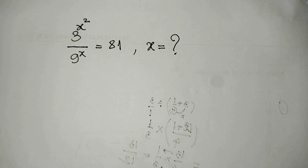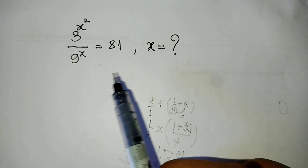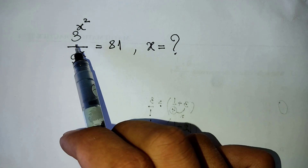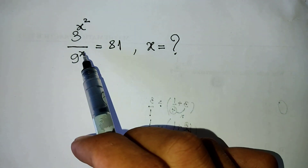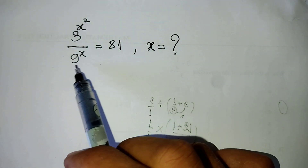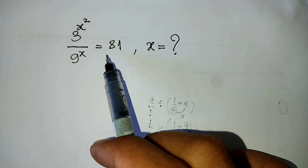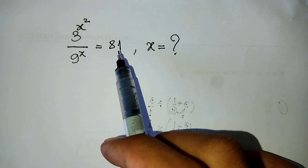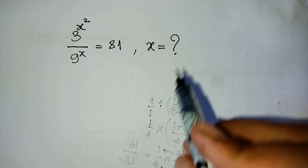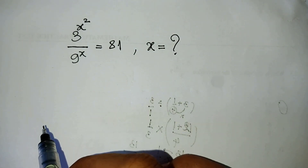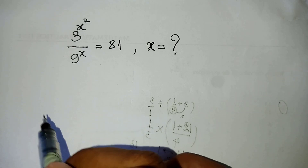Hello, here is my problem: 3 power x squared divided by 9 power 8 equals 81. Find the value of x. Please look at my solution.